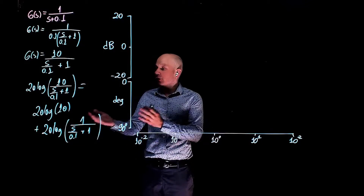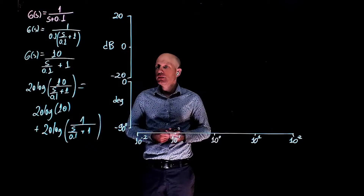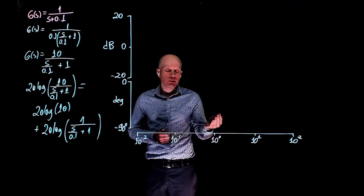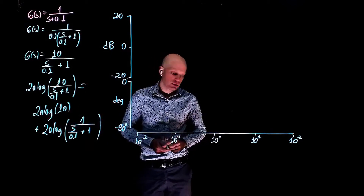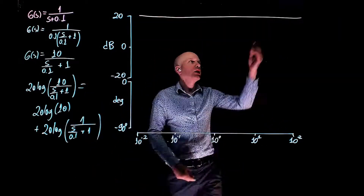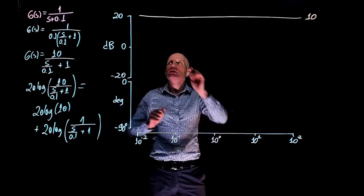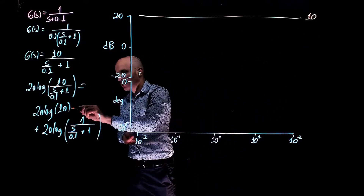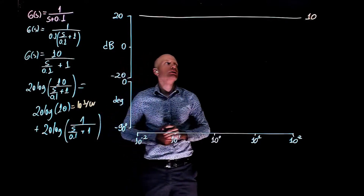Let's start with the constant gain. 20 log of 10 is 20, so that will give a constant value on the Bode plot of 20 decibels. This is always 20 dB for all frequencies.